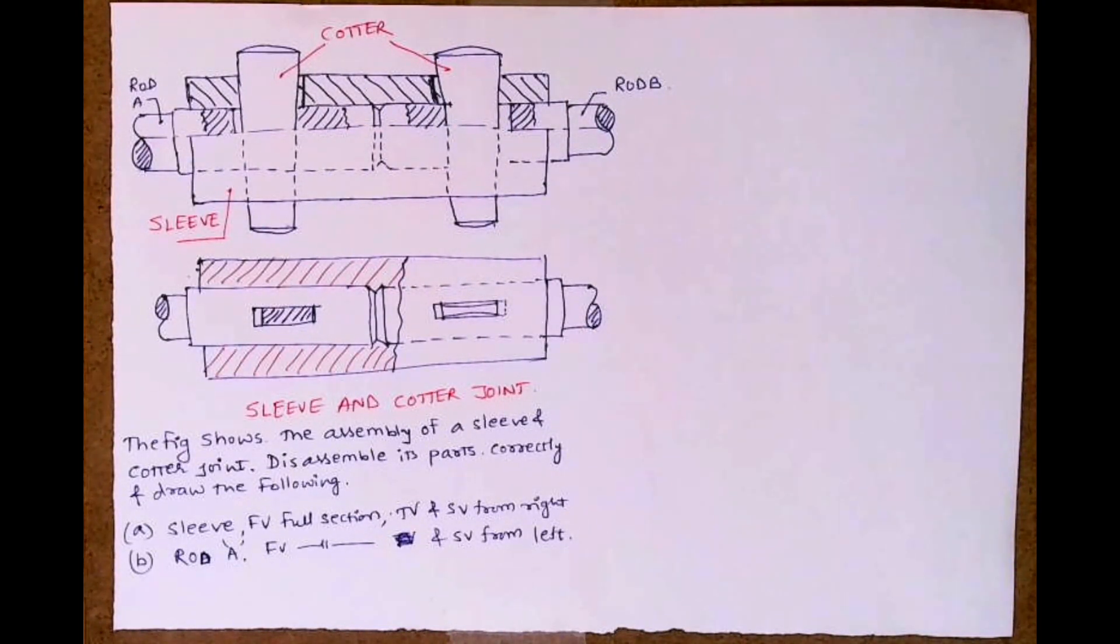Welcome to technical drawing. Today we are going to learn how to draw detailing of sleeve and cotter joint. The diagram shows the assembly of sleeve and cotter joint. We need to disassemble its parts correctly.